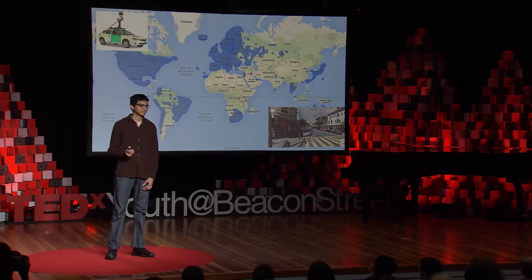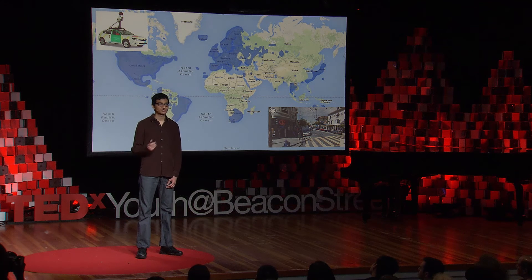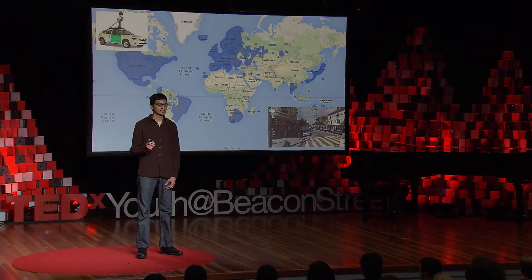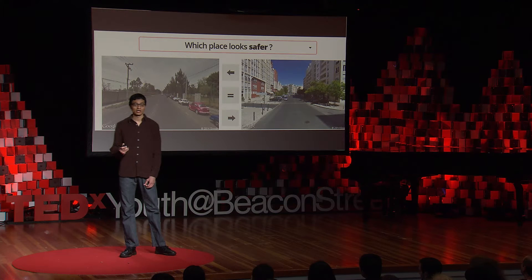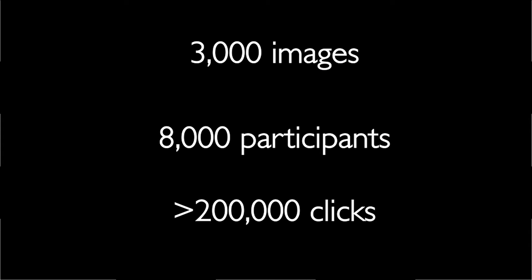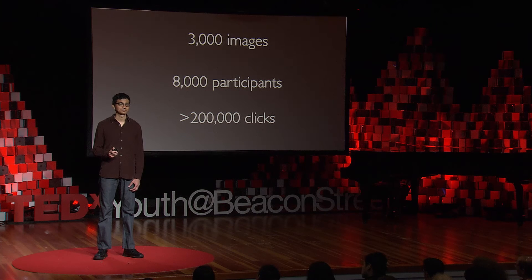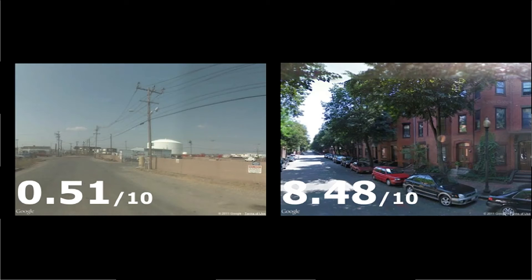We can do this using machine learning. In machine learning, the computer learns to do a task from examples. Our first goal is to create examples of how safe street blocks look to humans. To get these examples, we created an online game called Placesport. In this game, we showed people images from Street View side by side and asked them to choose which looked safer. This game was online for about four months and it went viral. We had 3,000 images from New York and Boston. 8,000 participants from more than 90 countries played this game and we got more than 200,000 clicks. We can take these clicks and assign scores between 0 to 10 to images based on how safe they look.